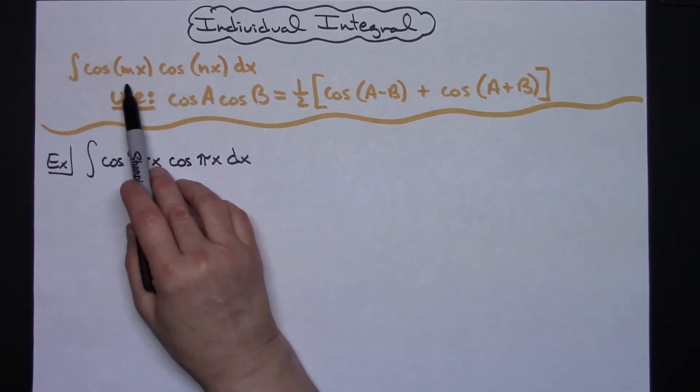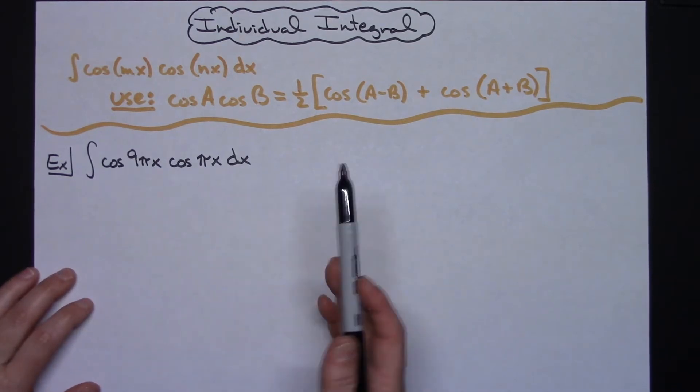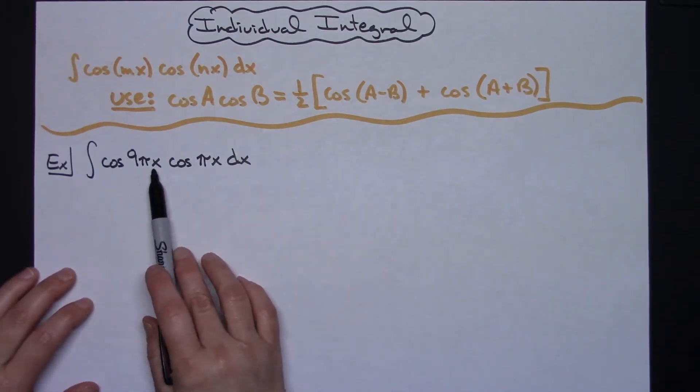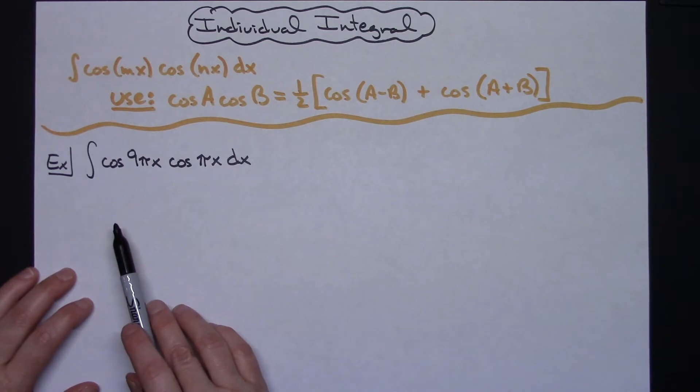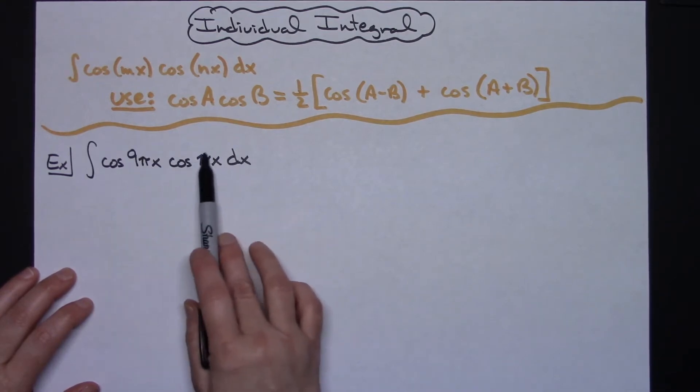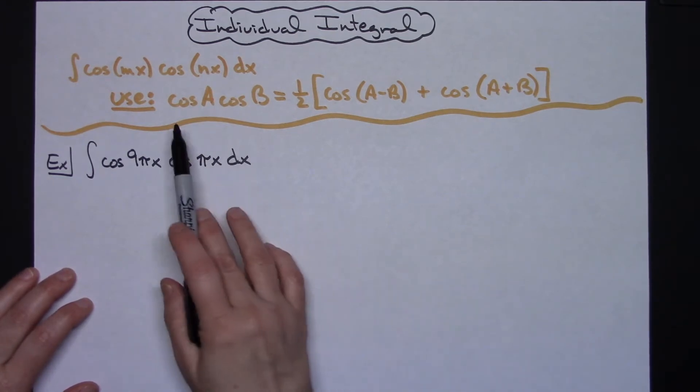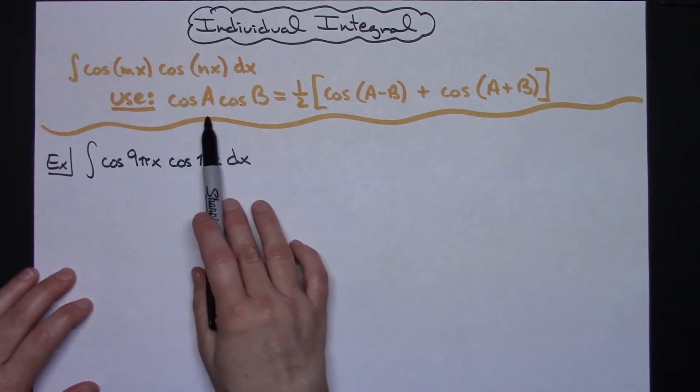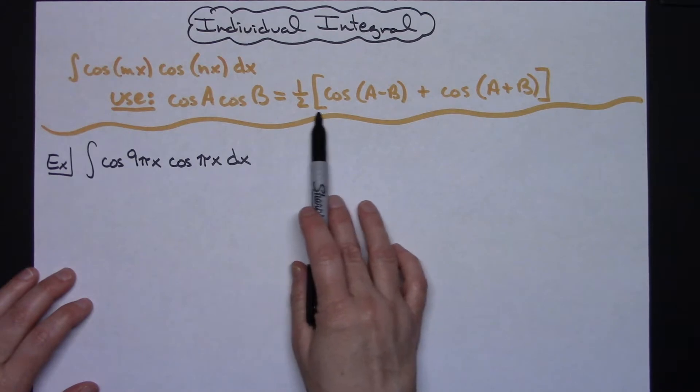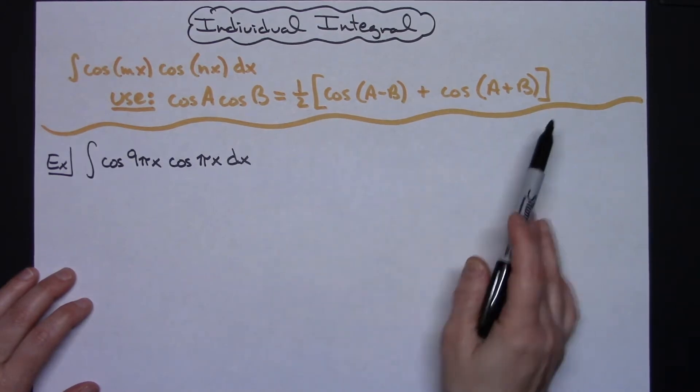In this scenario you might see something like cosine 9πx cosine πx, where we've got two quantities here, an A and a B. The first and easiest way to do this is with a trig substitution. I've got cosine A cosine B and I can substitute that for this formula right here.